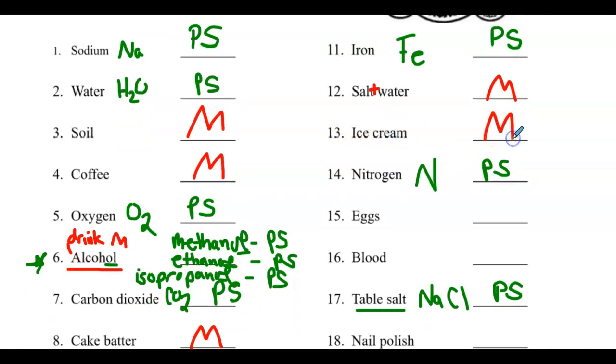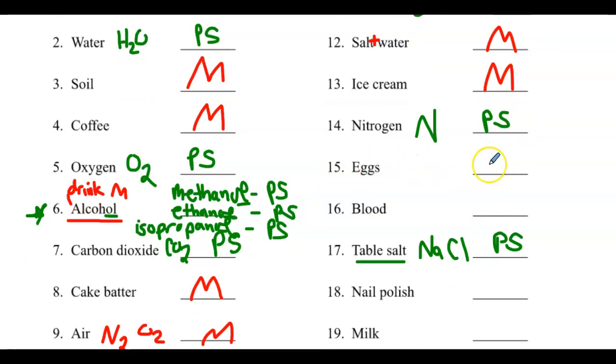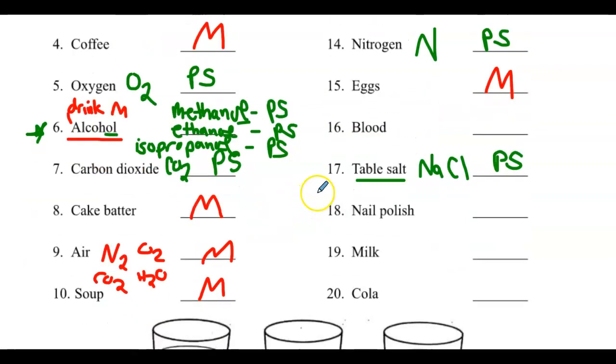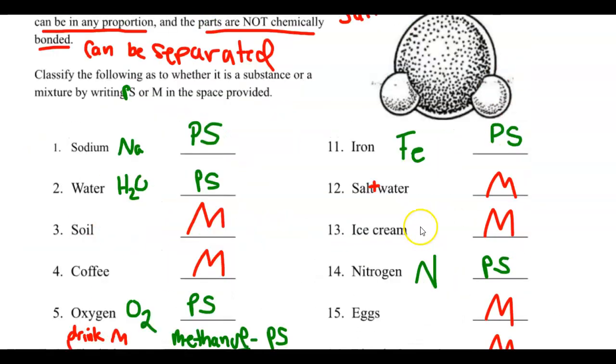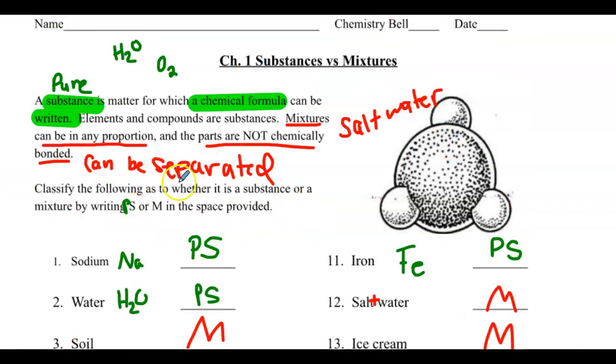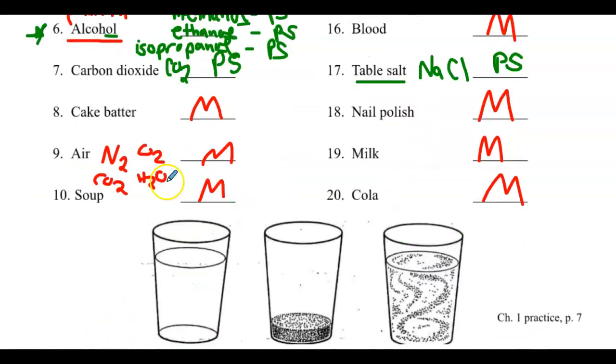Ice cream. Let's say Rocky Road. You can pick out all the different chunks in there. Eggs. You have the white. You have the yolk. It's definitely a mixture. Blood. It's a mixture. Look at it under a microscope. You can see all those different parts, components, and cells. Nail polish. You've got to shake it up. It's a mixture of different pigments, some chemicals. Milk, definitely a mixture. Cola, definitely a mixture. Good. So that's your page seven. If you don't agree with any of these, put a circle, star it, and come to class ready to defend your question.